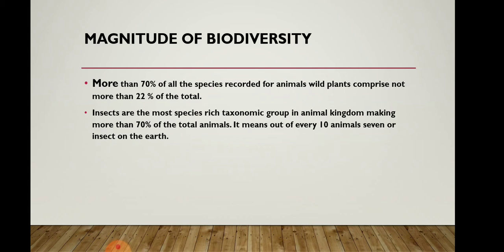Examples of insects include ants, bees, honeybees, houseflies, and mosquitoes — these all belong only to the insect group. If total animals are 100%, then 70% are insects. That means out of every 10 animals, 7 are insects on Earth's surface. If you take 10 species on Earth, then 7 of them are insects.